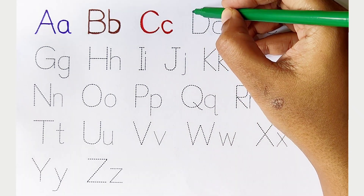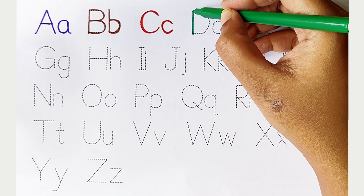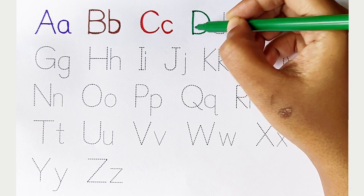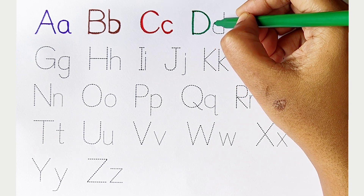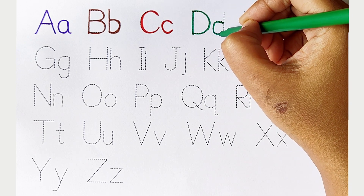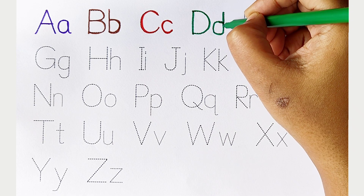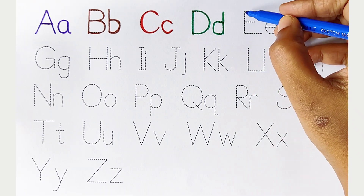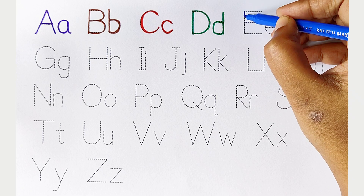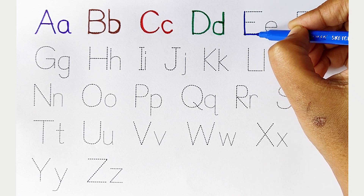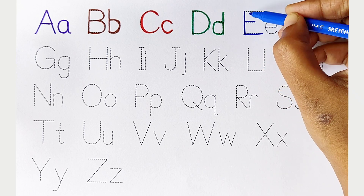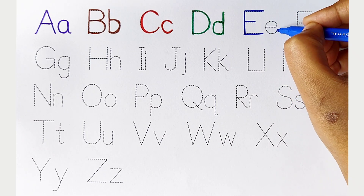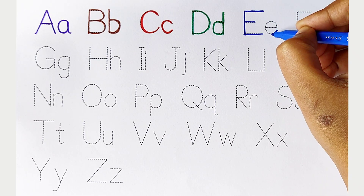D. Dark green color, capital D, small d. E. Dark blue color, capital E, small e.